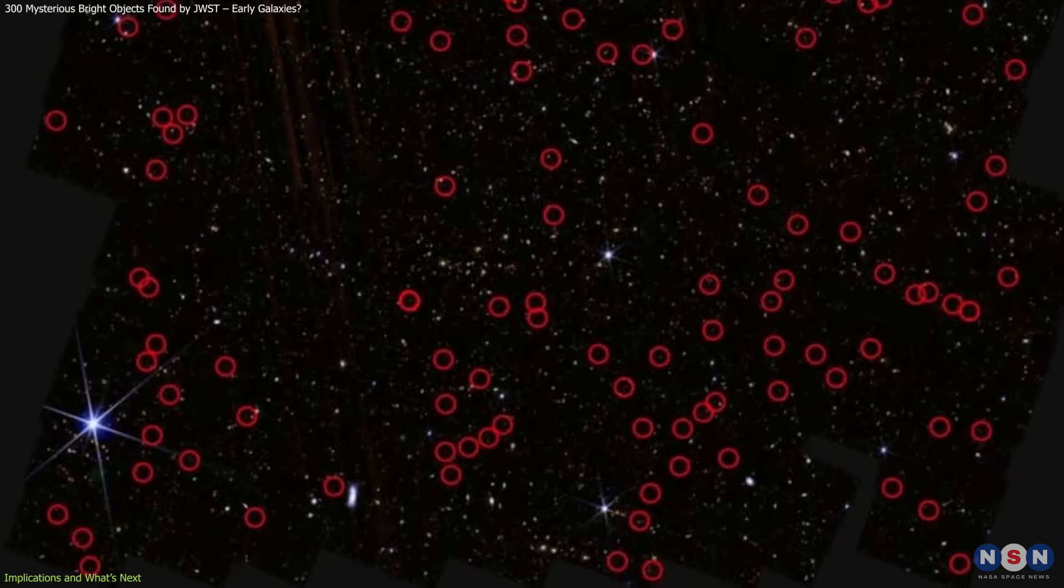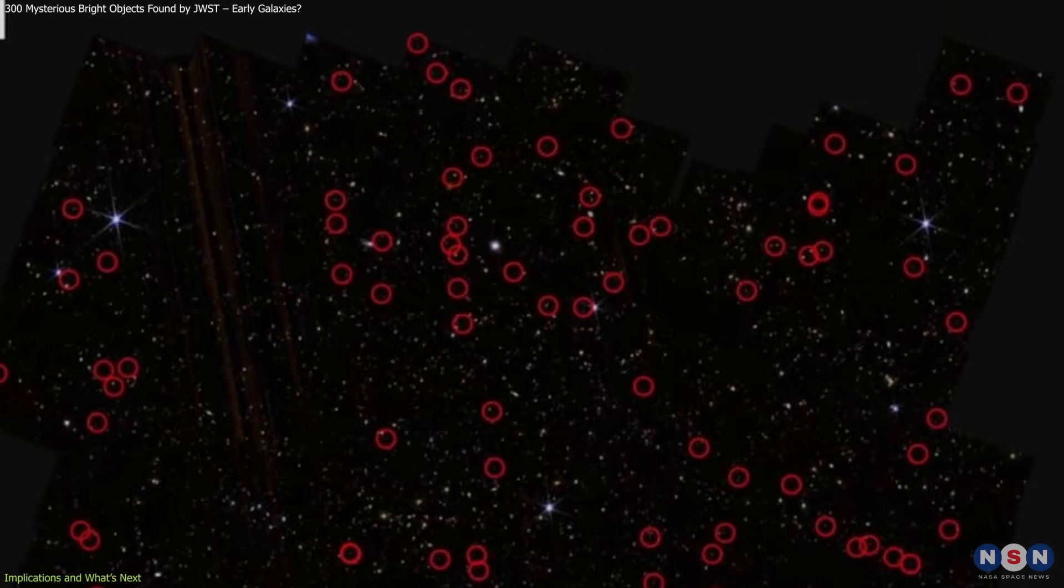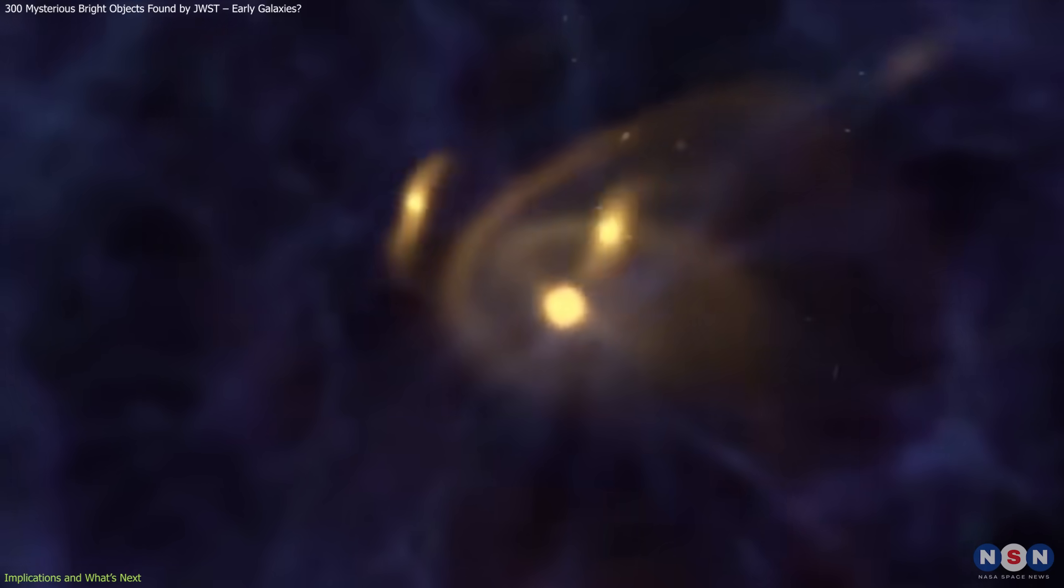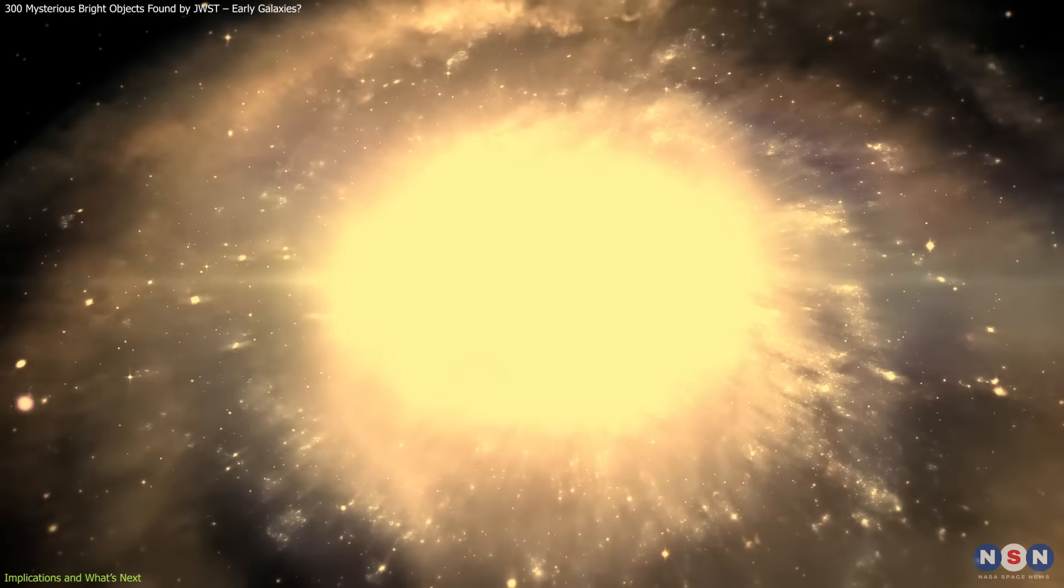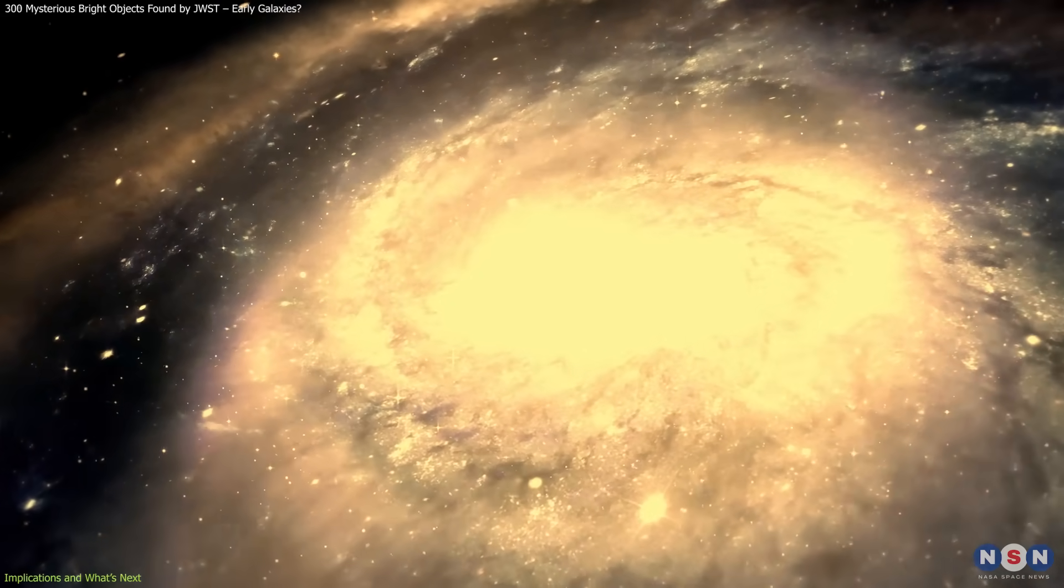If a substantial number of these 300 candidates are confirmed to be beyond redshift 8, it would pose a serious challenge to existing galaxy formation timelines. Models would need to account for galaxies assembling and producing large numbers of stars much earlier than previously thought.